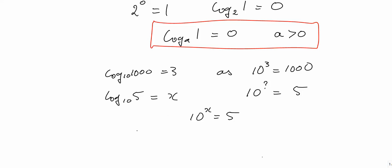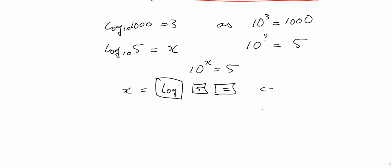x is an irrational number, and you can find an approximation by using the log button on the calculator. You'd press log button and then 5, then equals on the calculator, and you'll get 0.69897004, an irrational number that continues on.